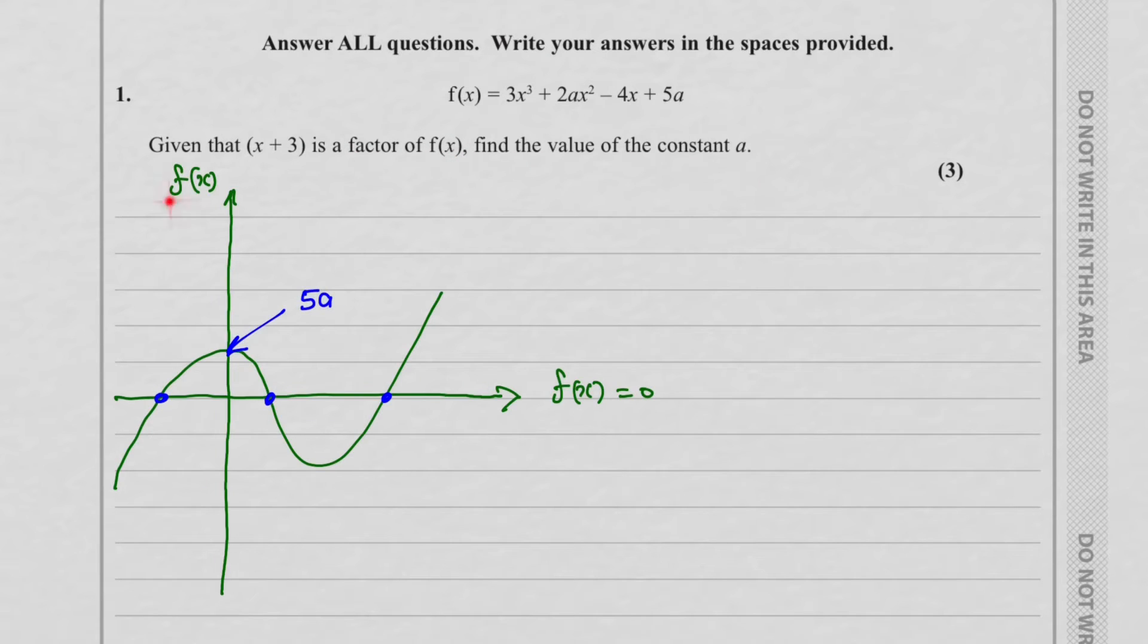So you can see this is a graph of f of x. Because the a is positive, it starts from the third quadrant. The point where it crosses the x-axis, that's the roots here. And the roots can be turned into a factor. One of the factors is x plus 3. So this is f of x equal to 0 at the root.